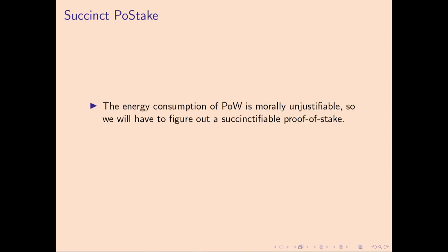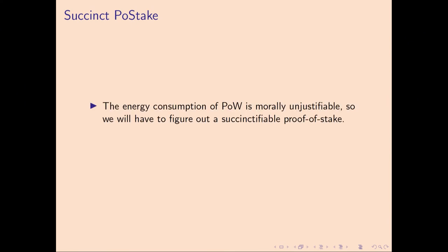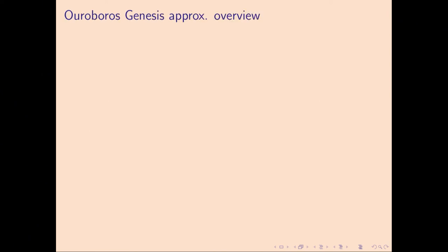Let's talk about proof of stake, because some things go wrong here. In my opinion, the energy consumption of proof of work is morally unjustifiable. So our best alternative at the moment is proof of stake, and lacking any better alternatives, we'll have to figure out some kind of succinctifiable proof of stake to prevent a coalition of the most powerful from rewriting the state arbitrarily. In this presentation and in Coda, we start from the Ouroboros protocol, which is a very bare-bones, clean proof-of-stake protocol.